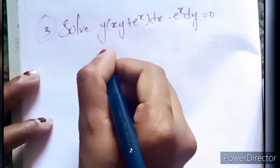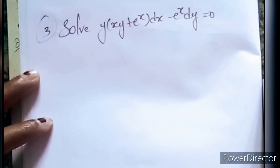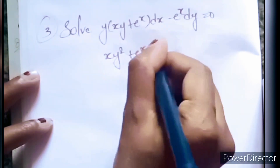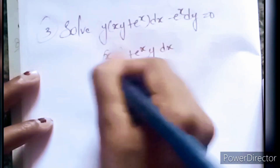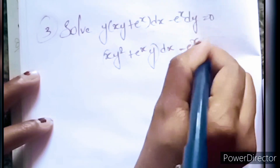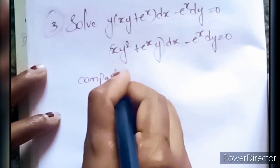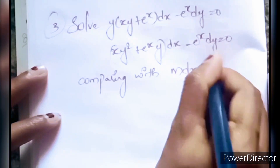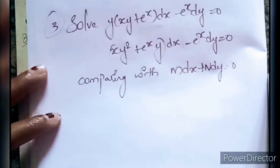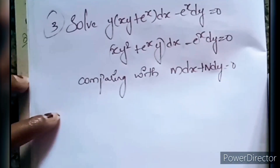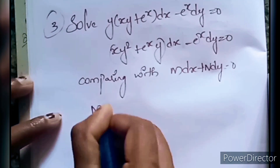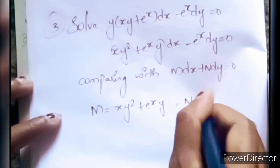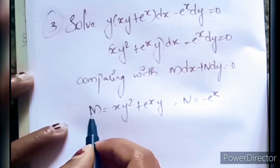Now this equation can be written as xy² + eˣ·y dx − eˣ dy. Comparing with M dx + N dy = 0, here M equals xy² + eˣ·y and N equals −eˣ.